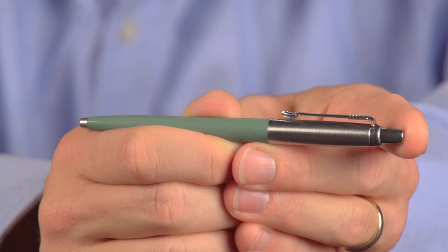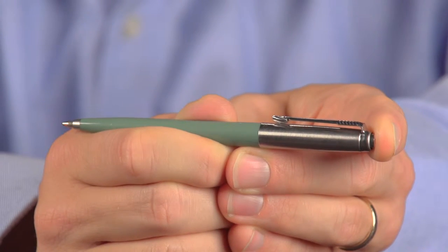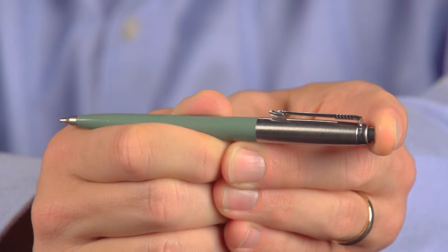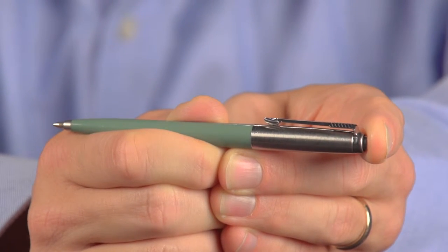Now listen carefully, and you'll notice that it emits four clicks. A click when I push the button, a second click when I release it, and then when I push the button to retract the ink cartridge, a third click, and release, a fourth click. To understand why these clicks occur, let's look inside.